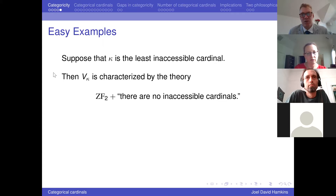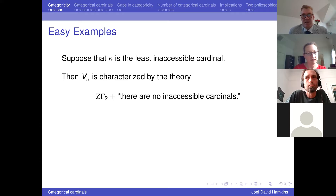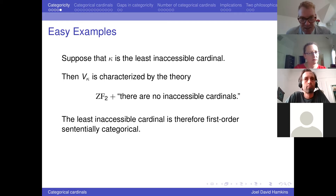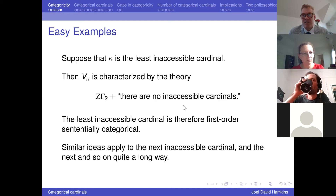So if you have the least inaccessible cardinal, then V_kappa is characterized by the theory ZFC2 plus 'there are no inaccessible cardinals' — or equivalently, there's no initial segment of me that satisfies ZFC2. The least one is the only one that doesn't have any inaccessible cardinals below it, so that completely determines that model. Therefore, the least inaccessible cardinal is first-order sententially categorical. We could also define the next one: it's the only one that thinks there's exactly one inaccessible cardinal, and so on.